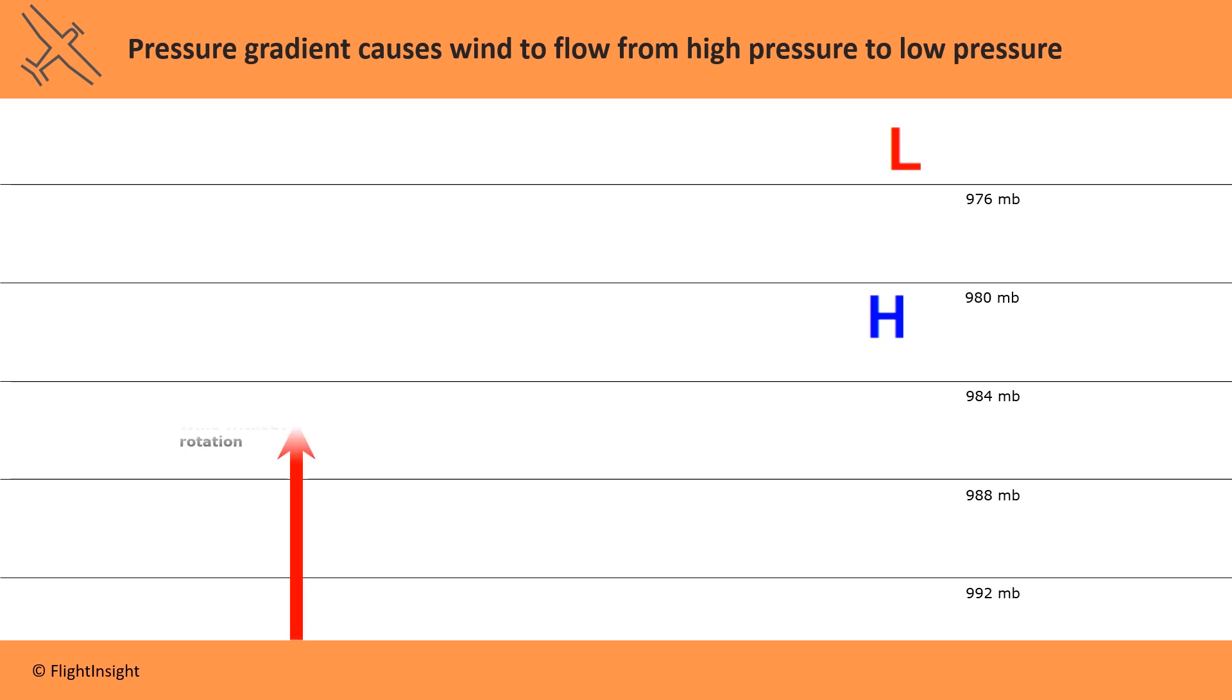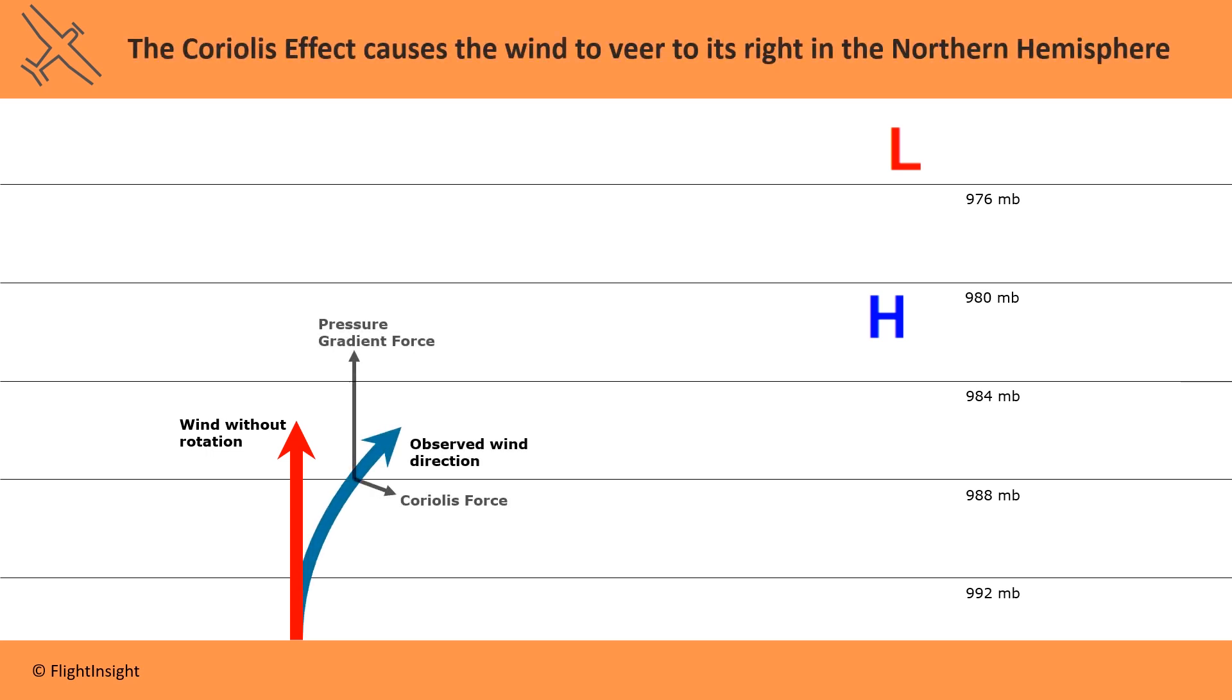It flows across or perpendicular to these lines of equal pressure called isobars. The rotation of the Earth causes the wind to veer to the right in the Northern Hemisphere due to the Coriolis effect.